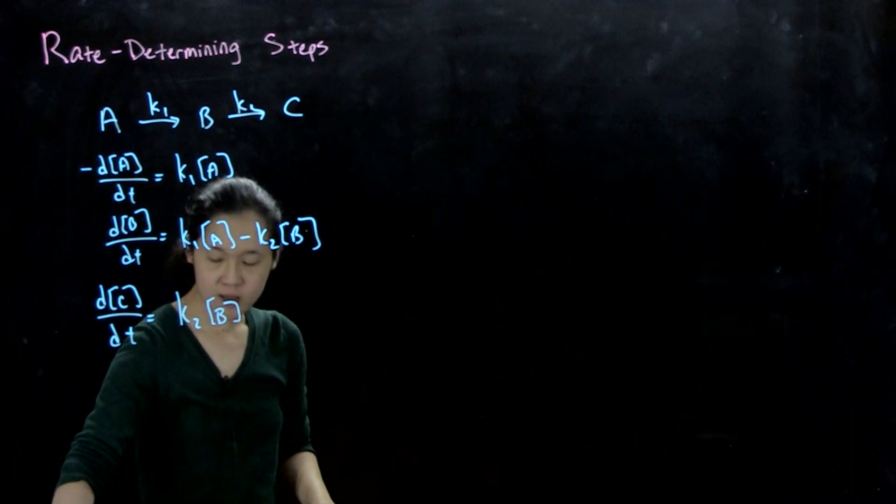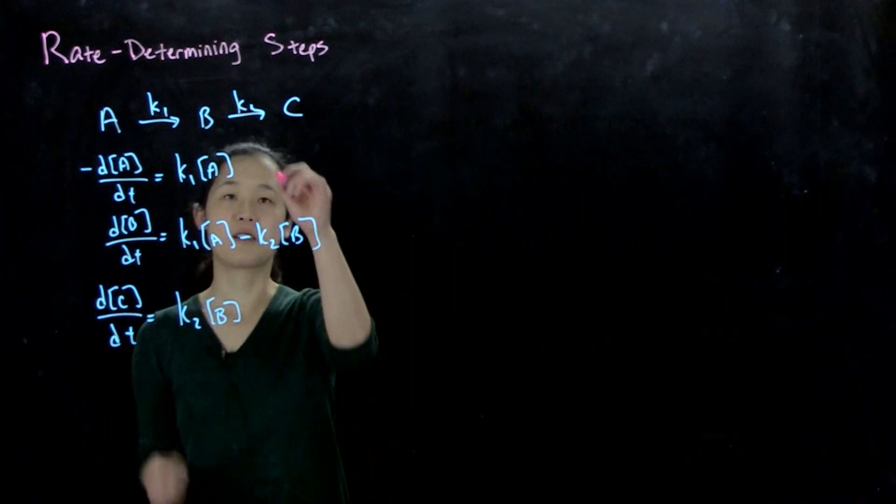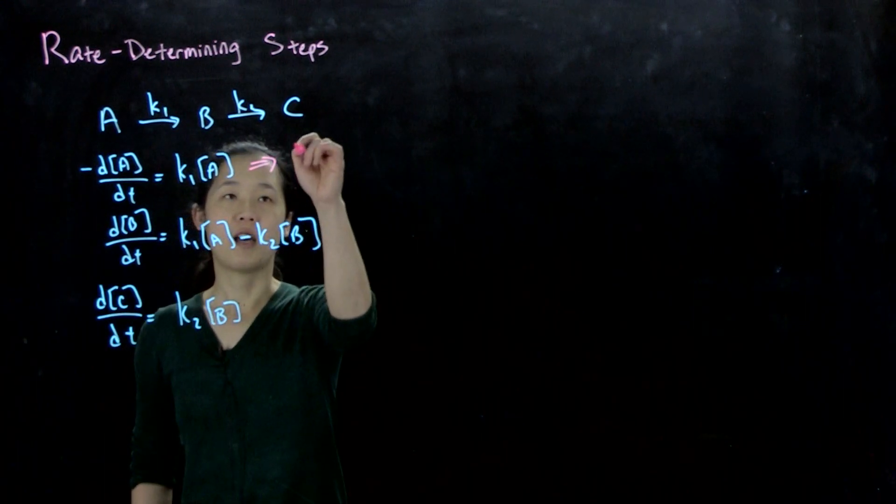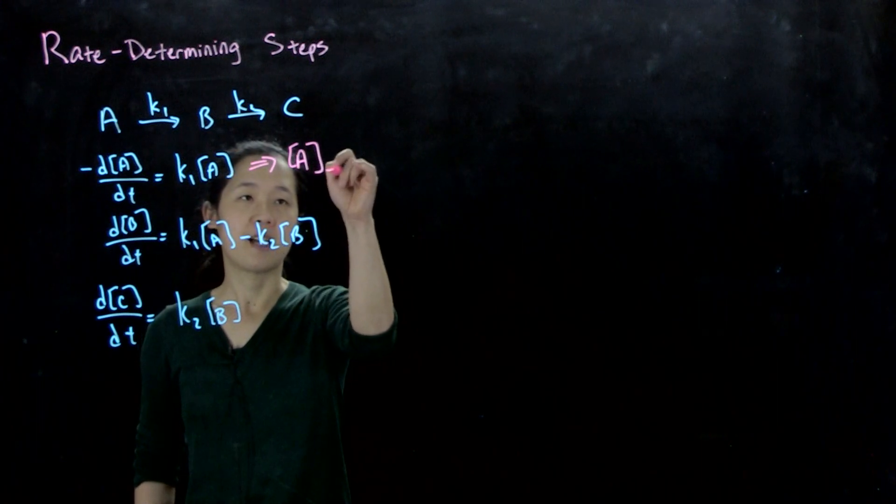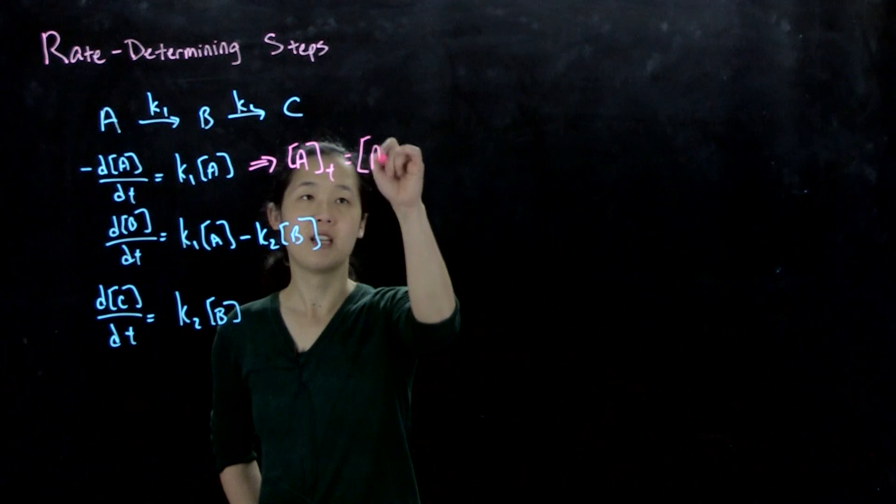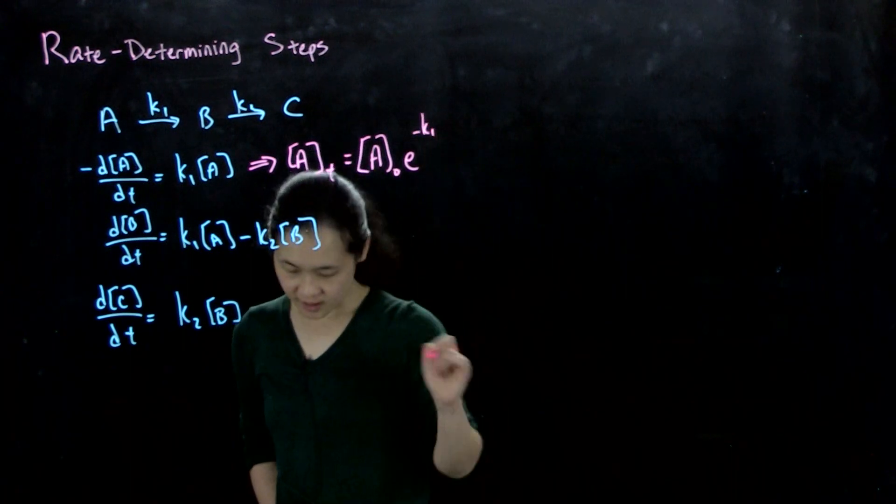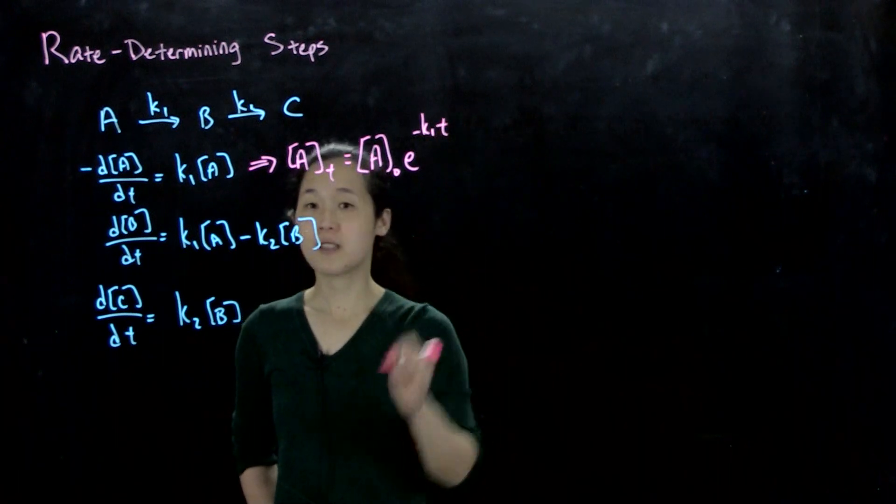So if we convert these into integrated rate expressions, we can do that. For the first one, it should be easy. We know that concentration of A at time t should be equal to our initial concentration of A times e to the negative k1t.